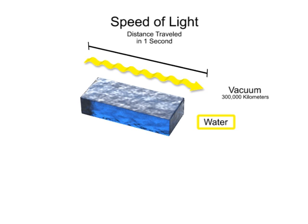In water, light travels at about 75% of its speed in a vacuum, or 225,000 km per second.